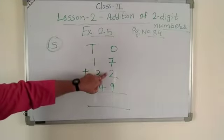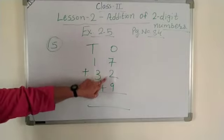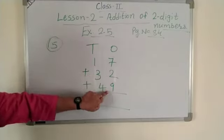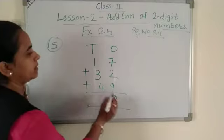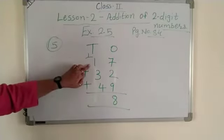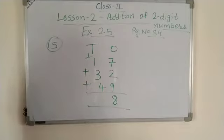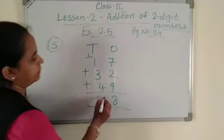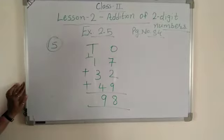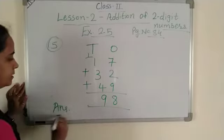Now add 3 numbers. First add 7 plus 2 equals 9, then 9 plus 9 equals 18. Write 8 here, 1 up. Then 1 plus 1 equals 2, 2 plus 3 equals 5, 5 plus 4 equals 9. How many marks total? He got 98.